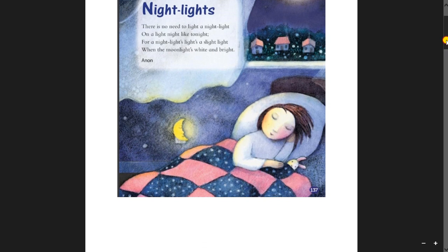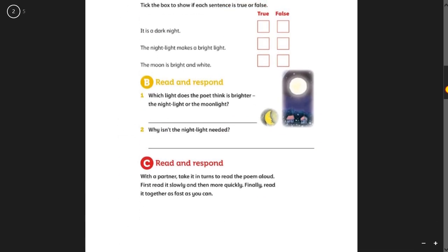Moon lights white and bright. Moon lights white and bright. Okie dokie. Question B. Which light does the poet think is brighter? The night light or the moonlight? What do you think?